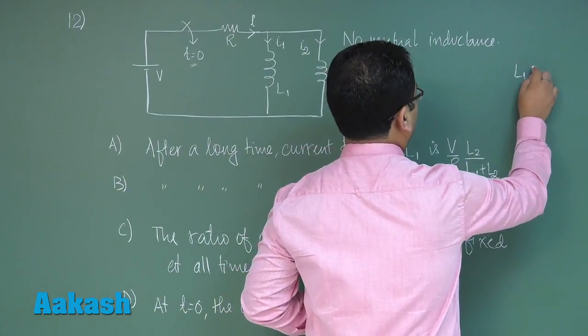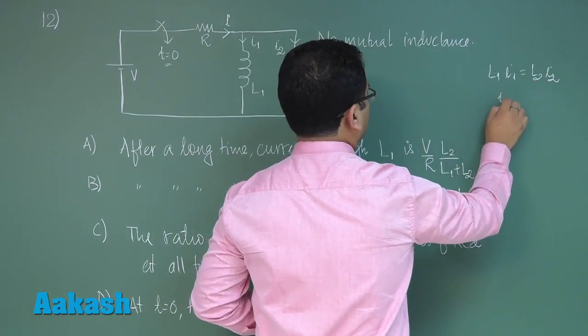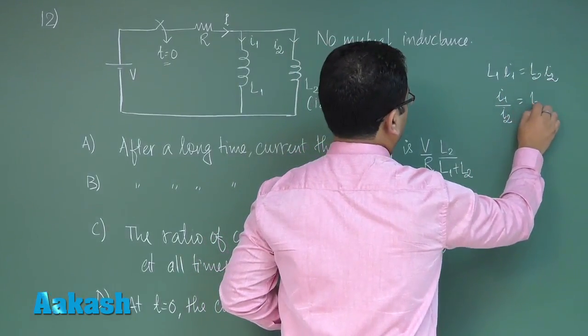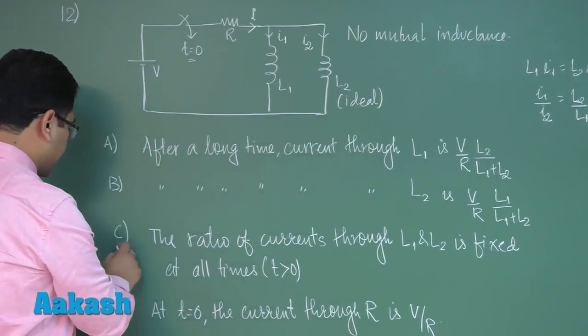That means L1*I1 would be equals to L2*I2, so the ratio of I1 by I2 would be L2 by L1. Henceforth option number C is correct.